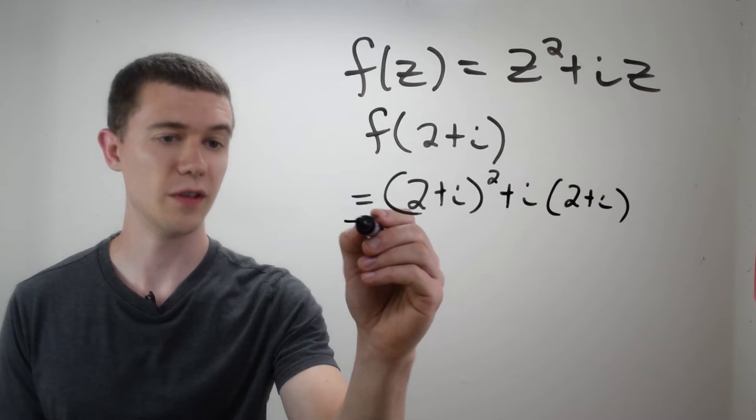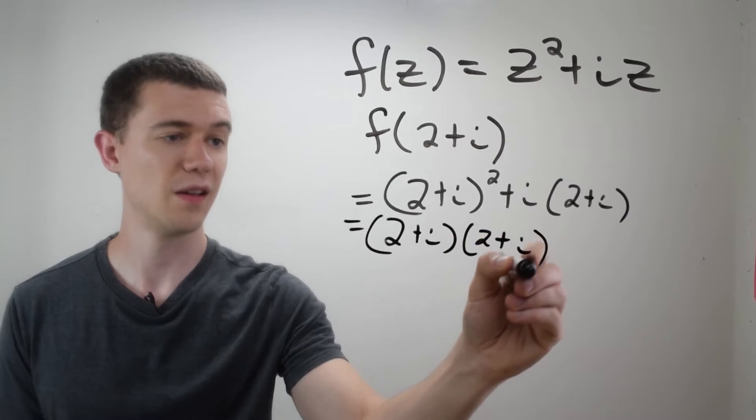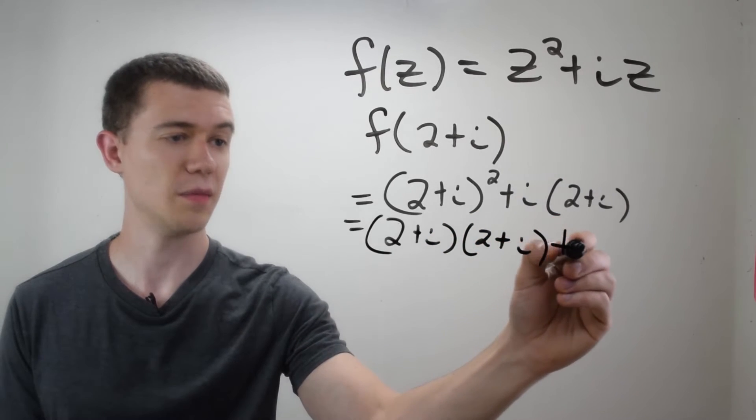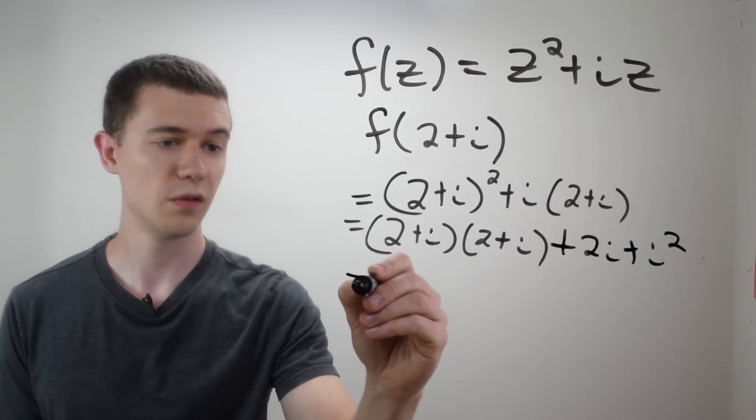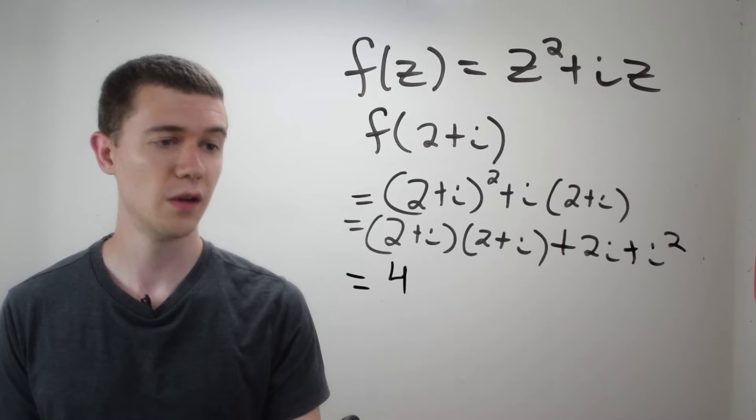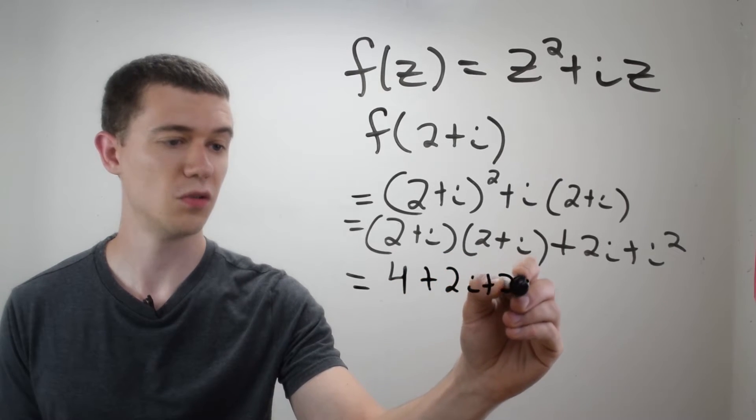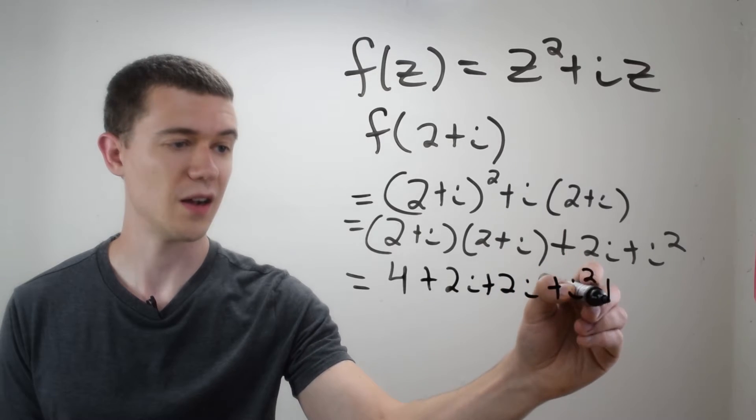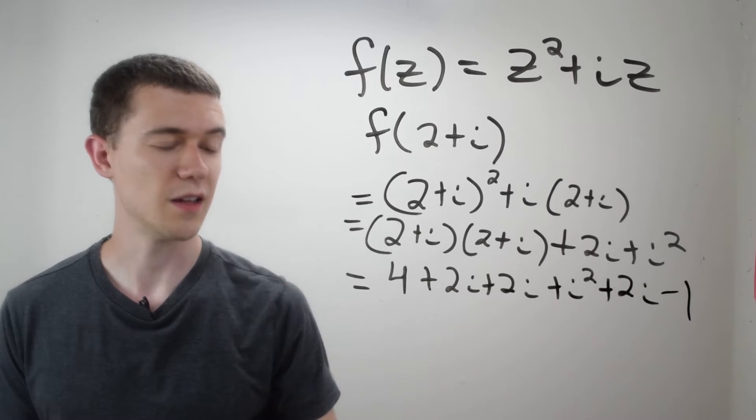And now I would have to FOIL this out. This is 2 plus i times 2 plus i. I'll distribute this i and make this 2i plus i squared. Here I'll FOIL. 2 times 2 is 4. 2 times i is 2i. i times 2 is 2i. And then plus another i squared plus 2i. And then this i squared, I'll just say that's negative 1.